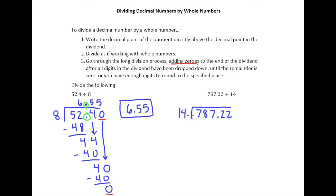15 goes into 78 five times. So maybe I'll guess 5 for my 14. 5 times 4 is 20. 5 times 1 plus 2 is 7. So that's 70. So we get a remainder of 8.